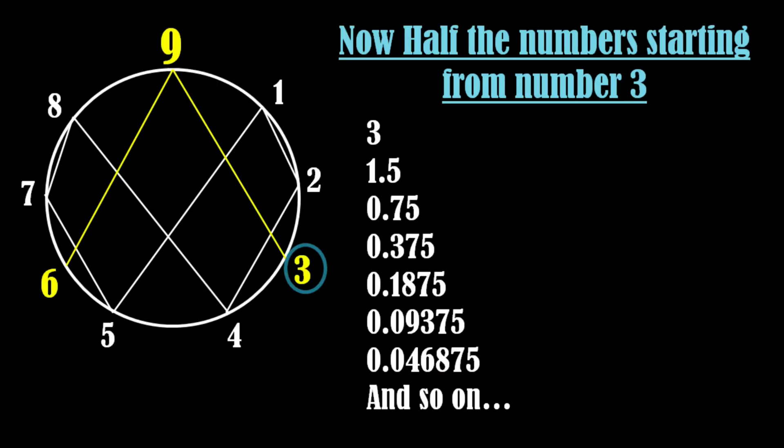Okay, let's do some more math. This time we will half the numbers repeatedly starting from number 3. Here are the numbers. Now again get the digital roots of the numbers by adding the digits of the number. And here is what we get. Amazing.